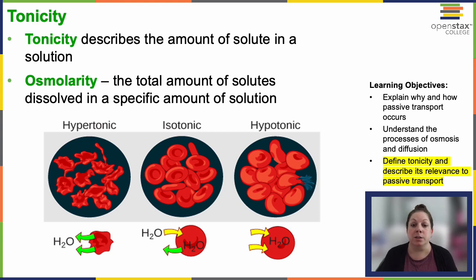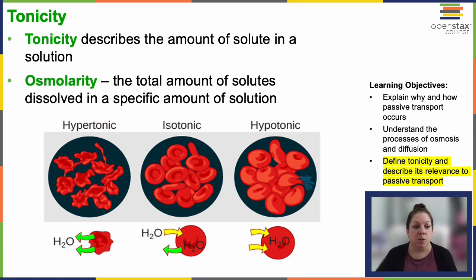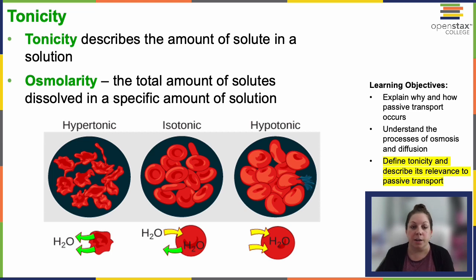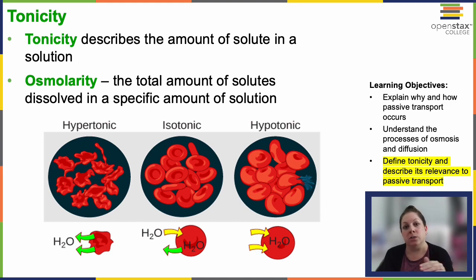Osmolarity is the total amount of solutes dissolved in a specific amount of solution. We can have a hypertonic solution, where there is much more solute outside the cell, and it drives water out of the cell to try to even the concentration. We can have isotonic, where the amount of solute on either side of the membrane is equal — that makes the cell happy; animal cells particularly like isotonic solutions. And then we can have hypotonic, where the concentration of solute inside the cell is a little higher than outside, which drives water into the cell. Plant cells actually like to be just a little bit hypotonic — it helps with turgor pressure so that they hold their shape.